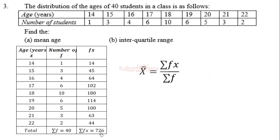Summation fx is 726 and summation f is 40, so you use your calculator to calculate this value and you find out that the mean age is 18.15 years.